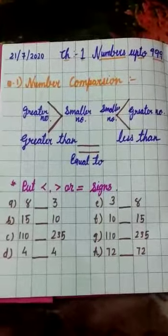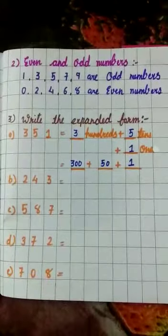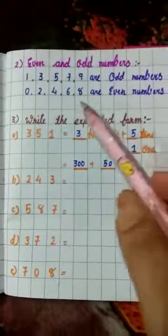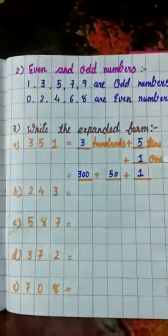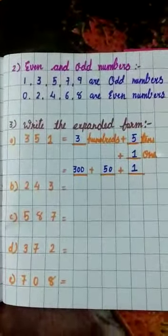Now come on to the new page. In the margin, write question number 2: even and odd numbers, because it is not given in our textbook.